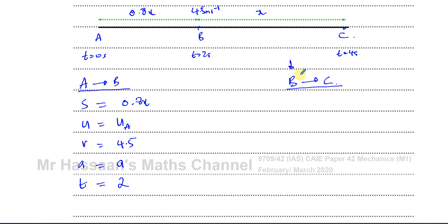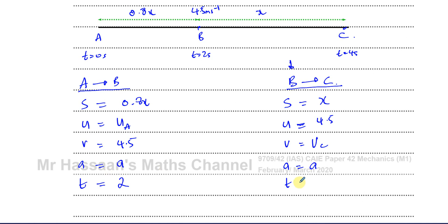Now for B to C: we're starting at B. S is X, U is the speed at B which is 4.5, V is the final speed at C which we don't know, A is the same acceleration as before, and T is 2 seconds — not 4 seconds, because we're considering from B to C not A to C. Be very careful about your SUVAT values — be very clear about directions, where you're starting, and where you're ending.